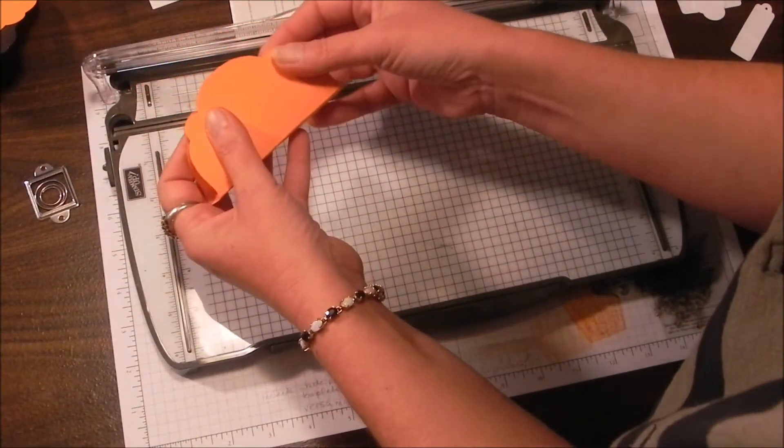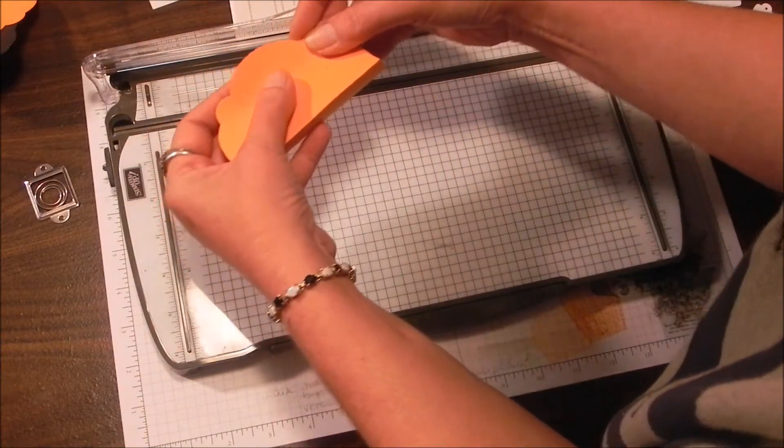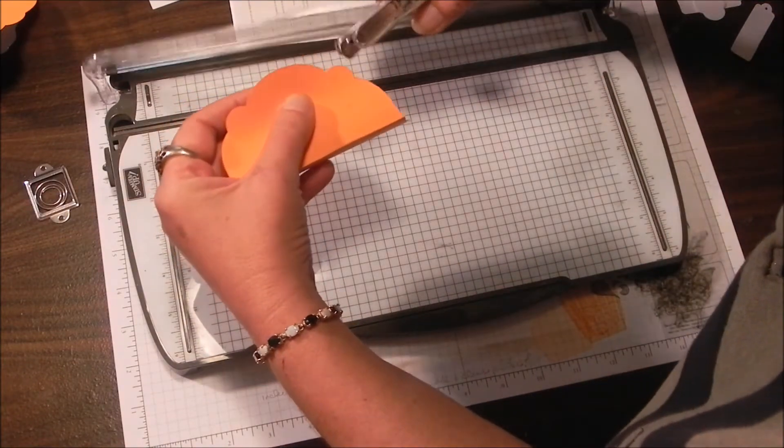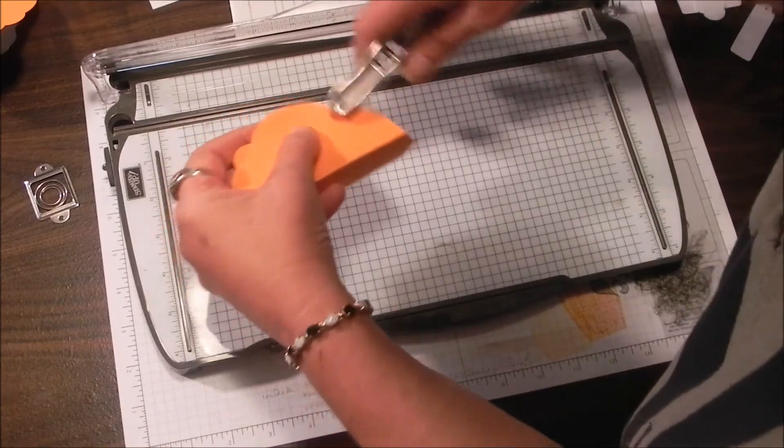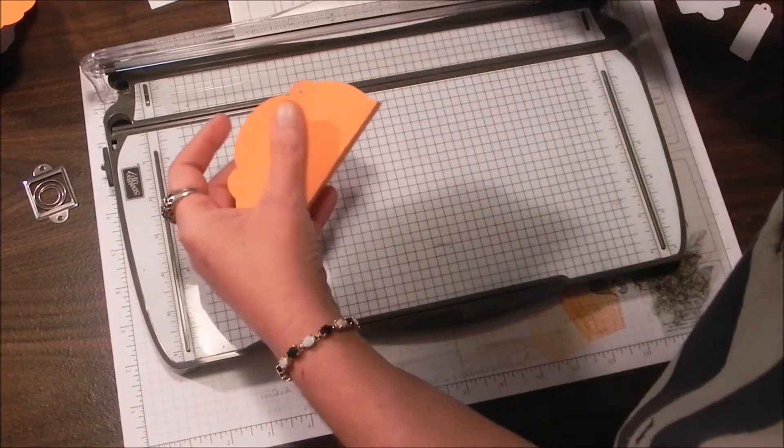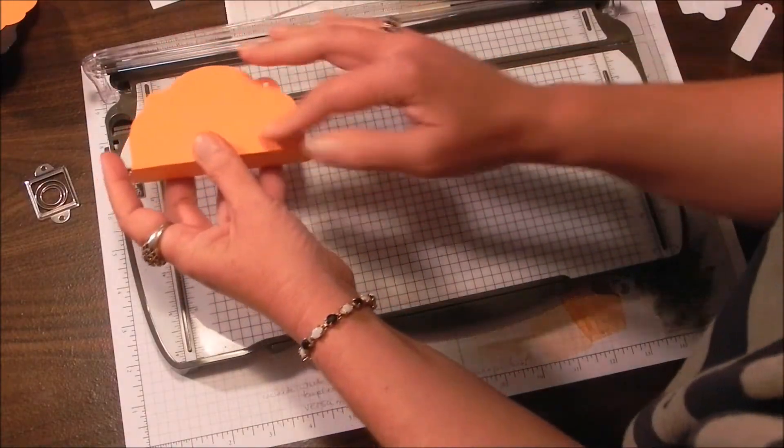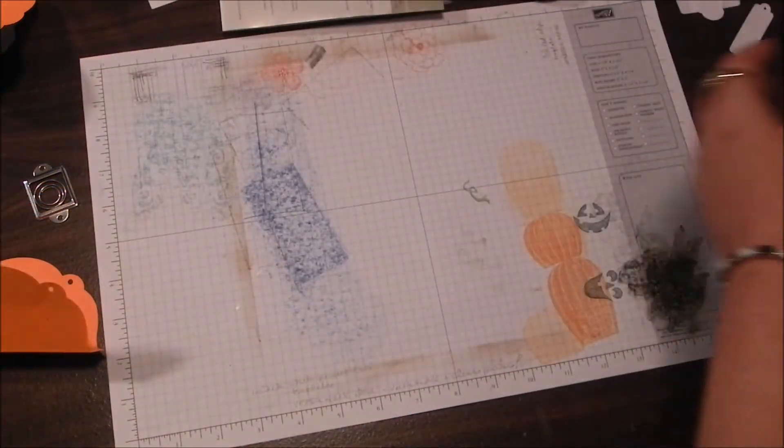All you'd have to do at this point is tack that down and then go ahead and punch two holes. That's going to be for your stringing, and that would be pretty simple. You could stamp that. But now, let's look at some other things.